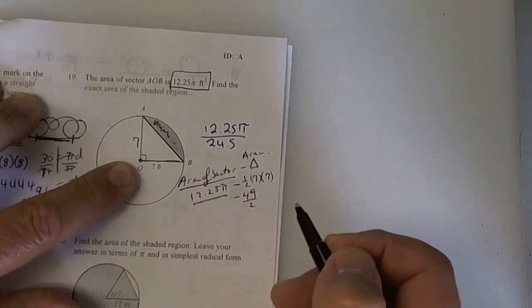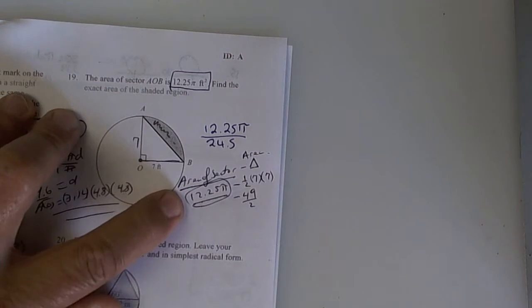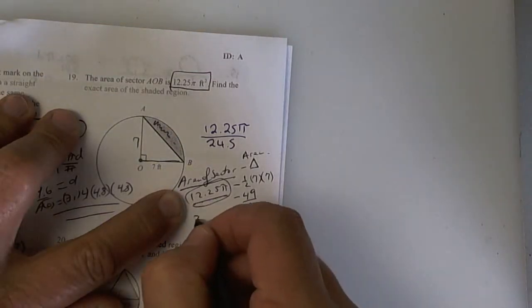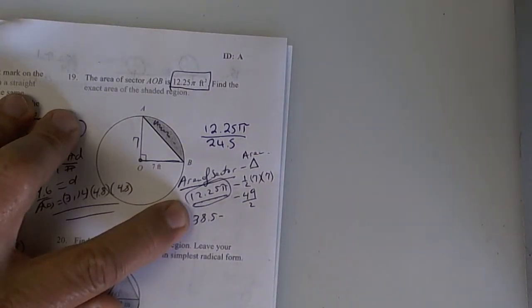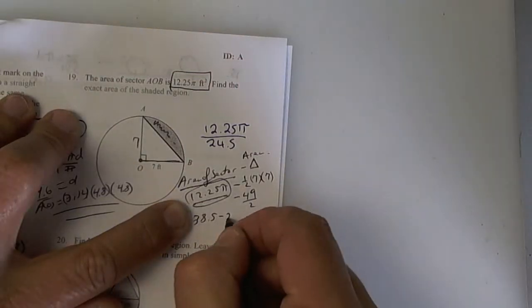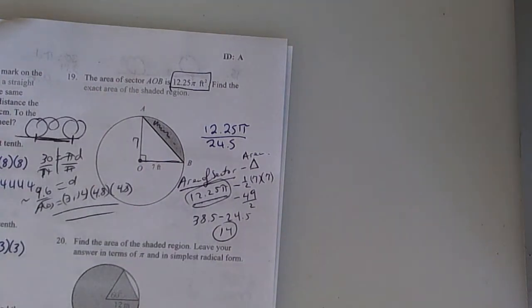So it's one-half the base times the height. So basically, it's going to be this minus half of 49. So 49 divided by 2. So again, take 12.25 times 3.14, and I get 38.5. So it's approximately 38.5 minus take 49 and divide by 2. I get 24.5. And when you subtract, you get 14. Approximately.